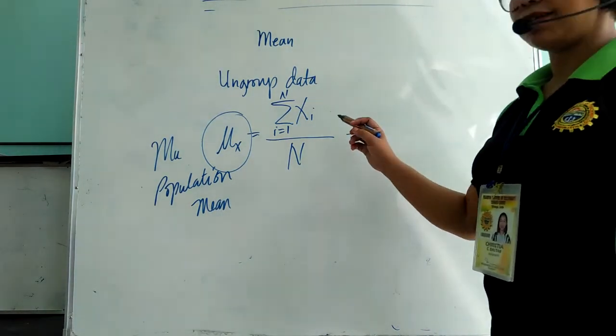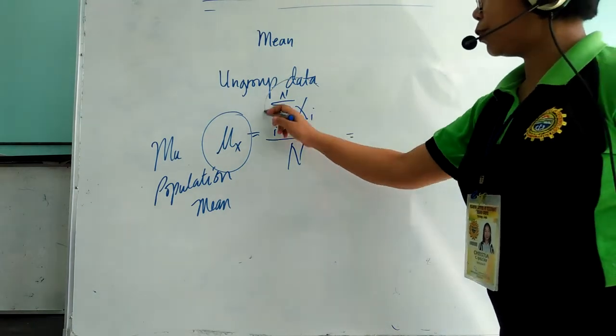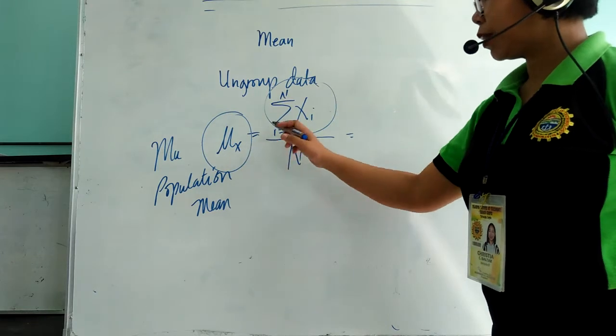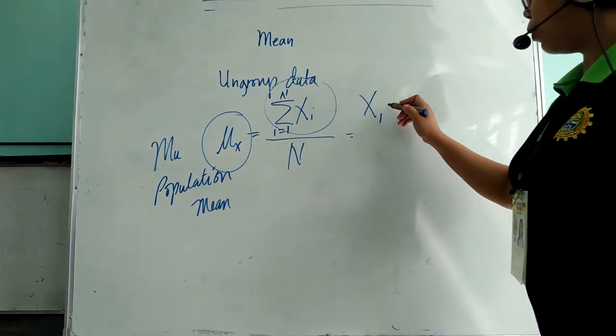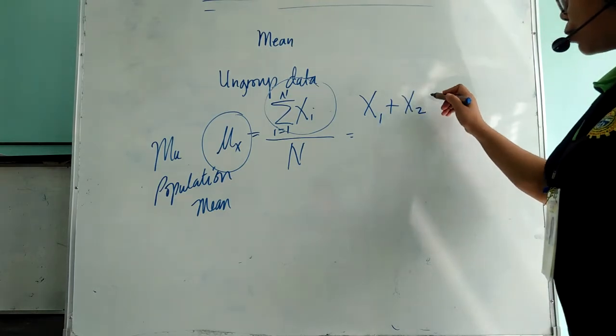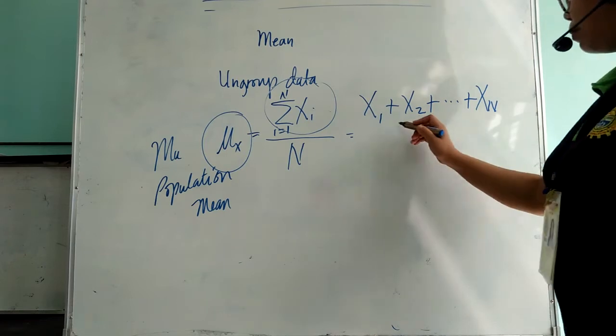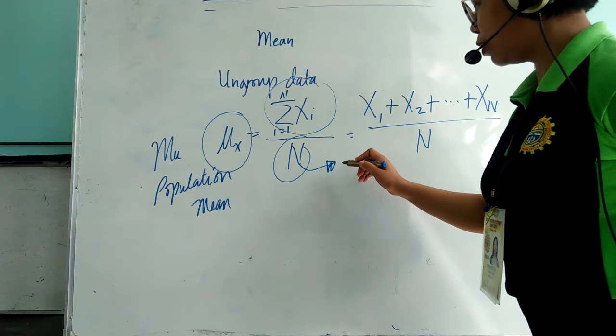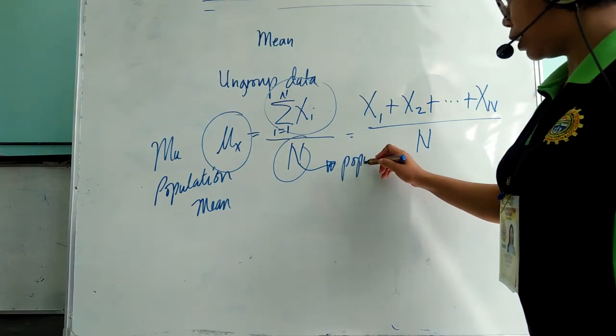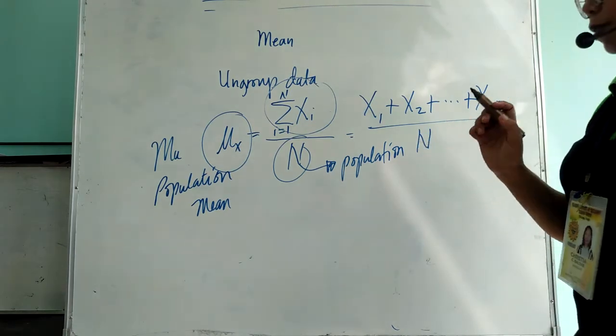Here we have to expand the summation notation. If we are going to solve for its mean, we have to expand the summation notation. So we have x sub 1 plus x sub 2 until x sub big N divided by big N. Your big N denotes your population or the total number of observations.